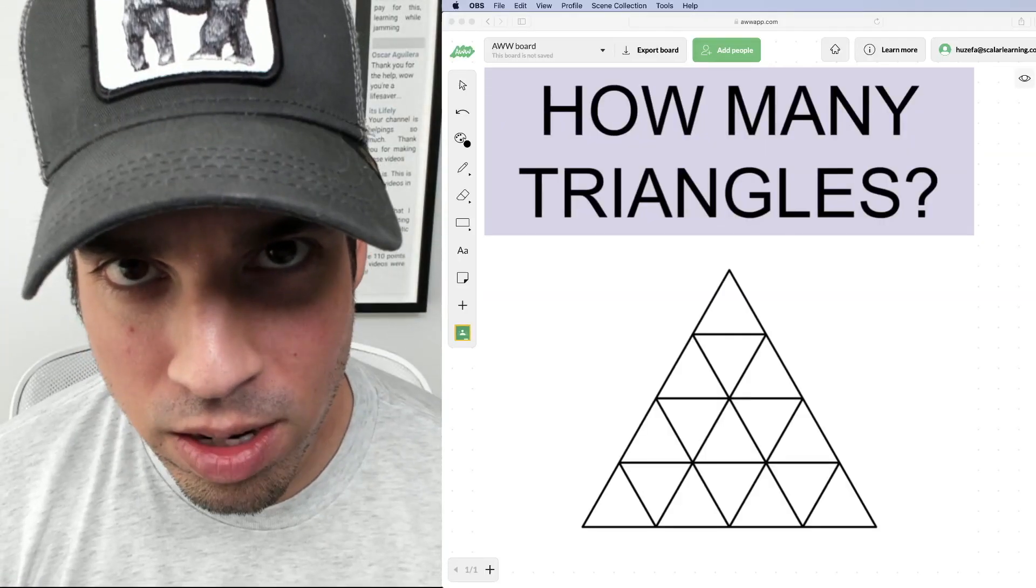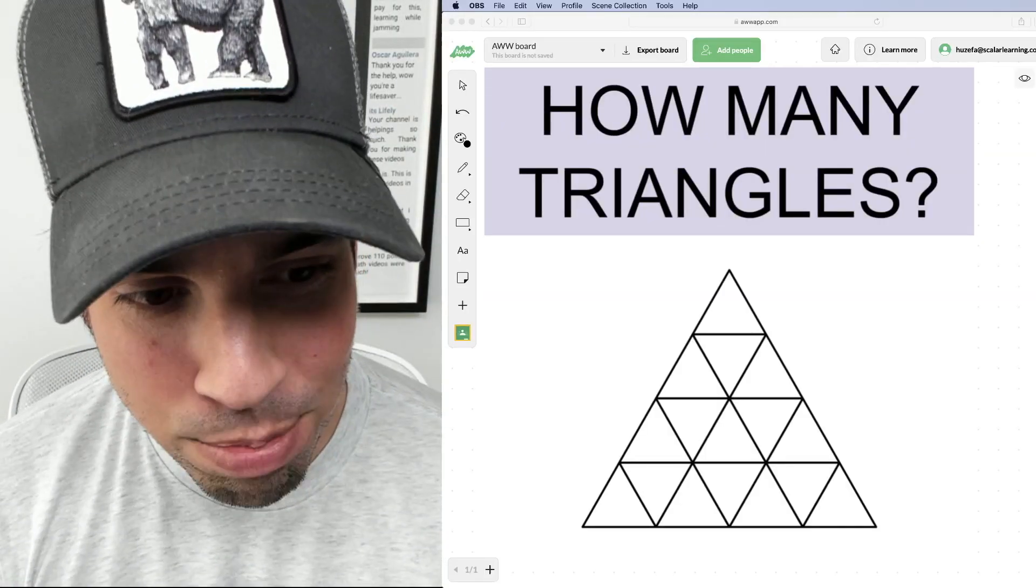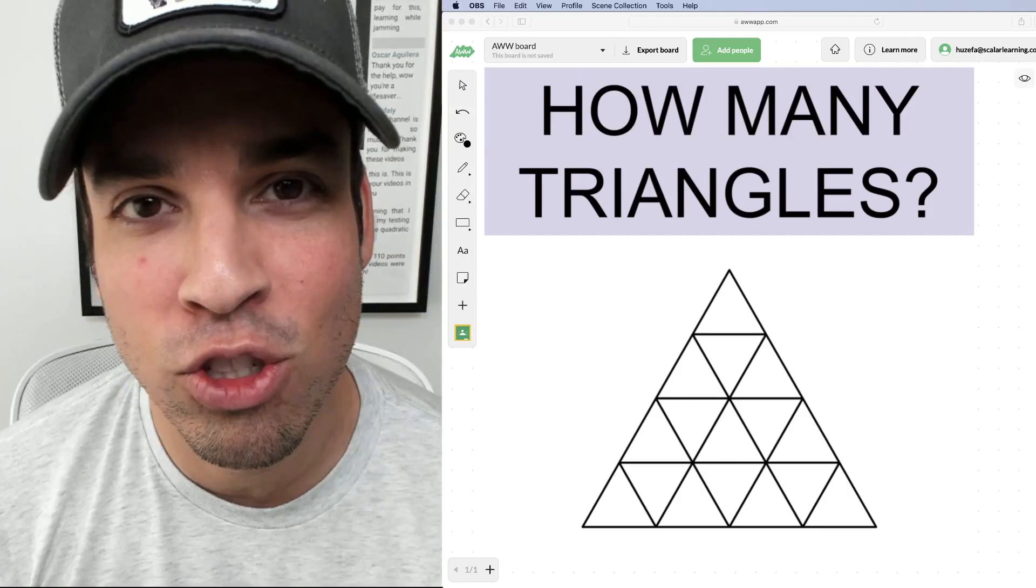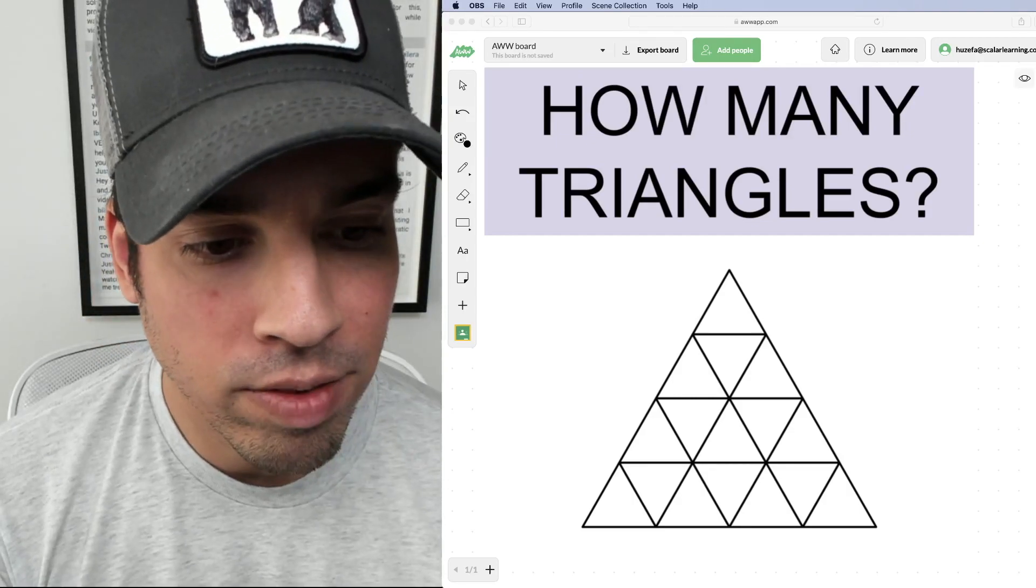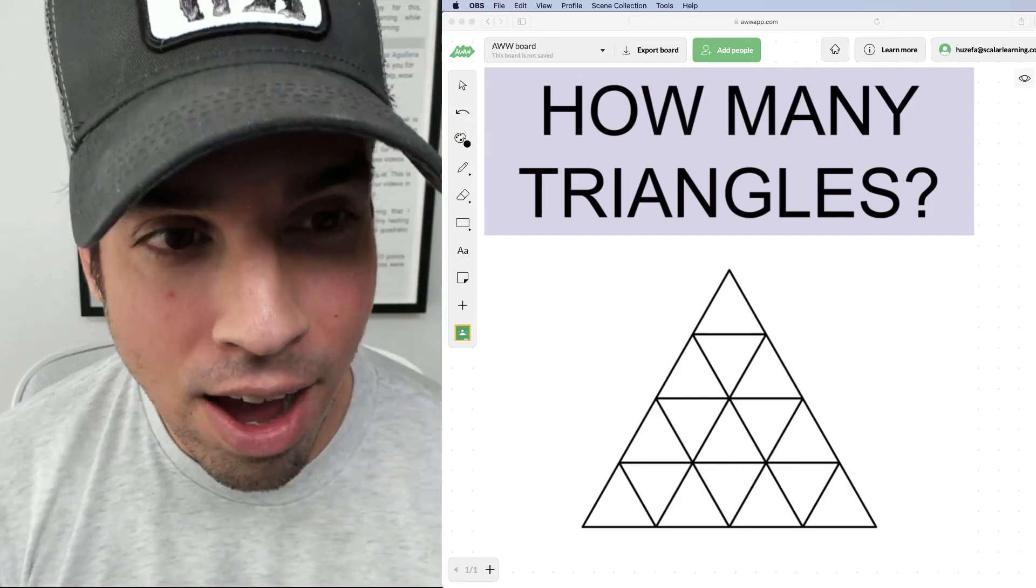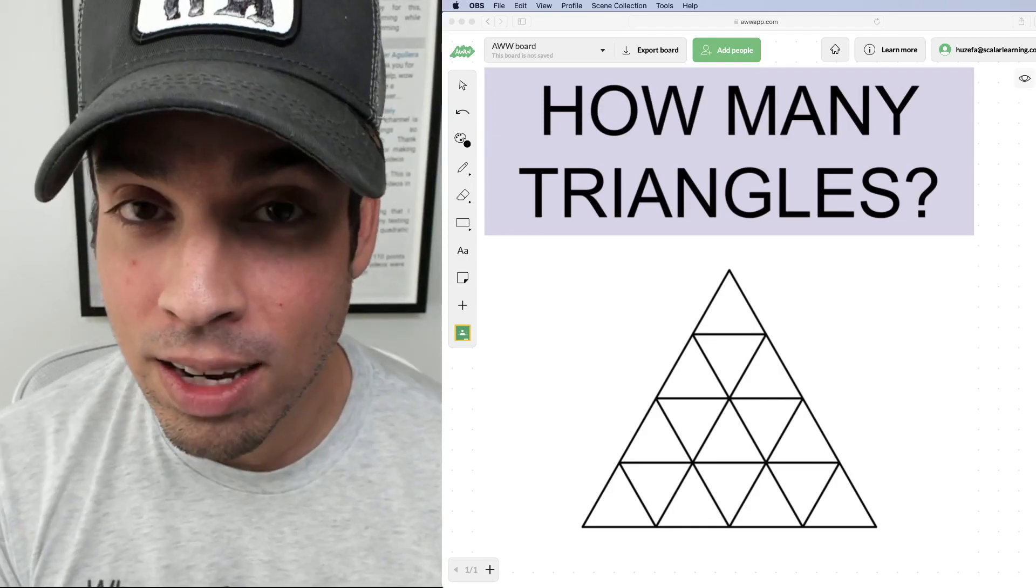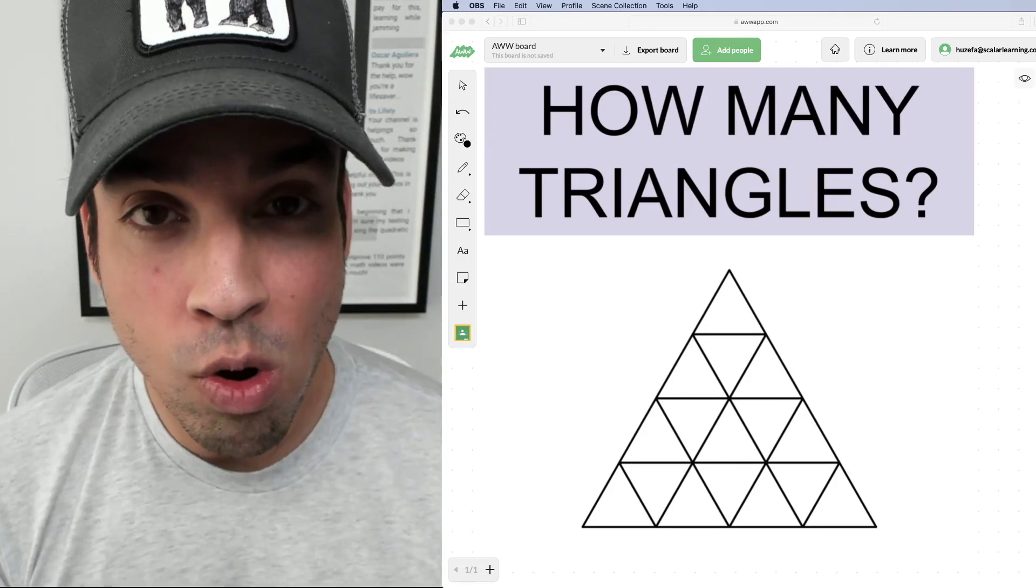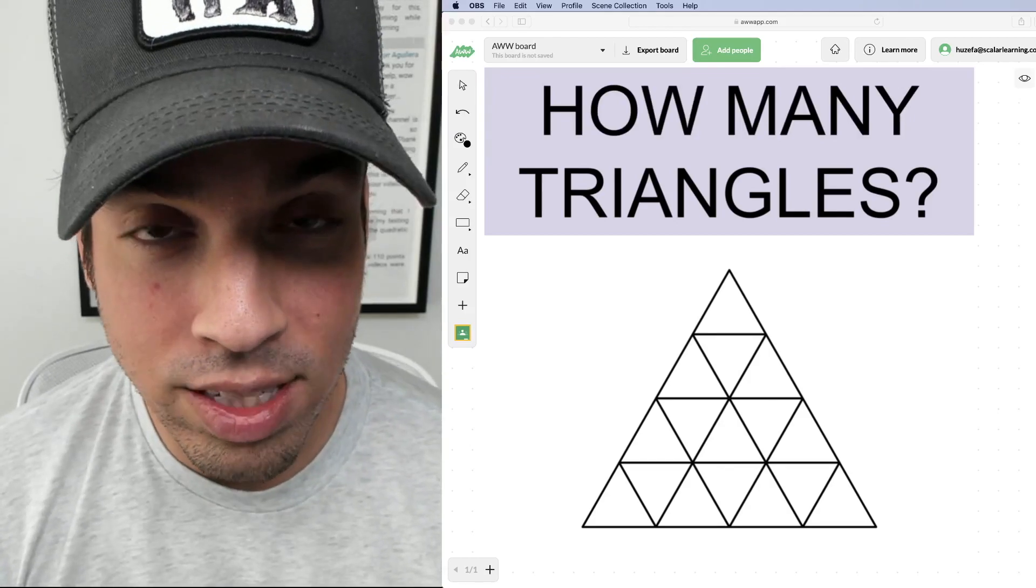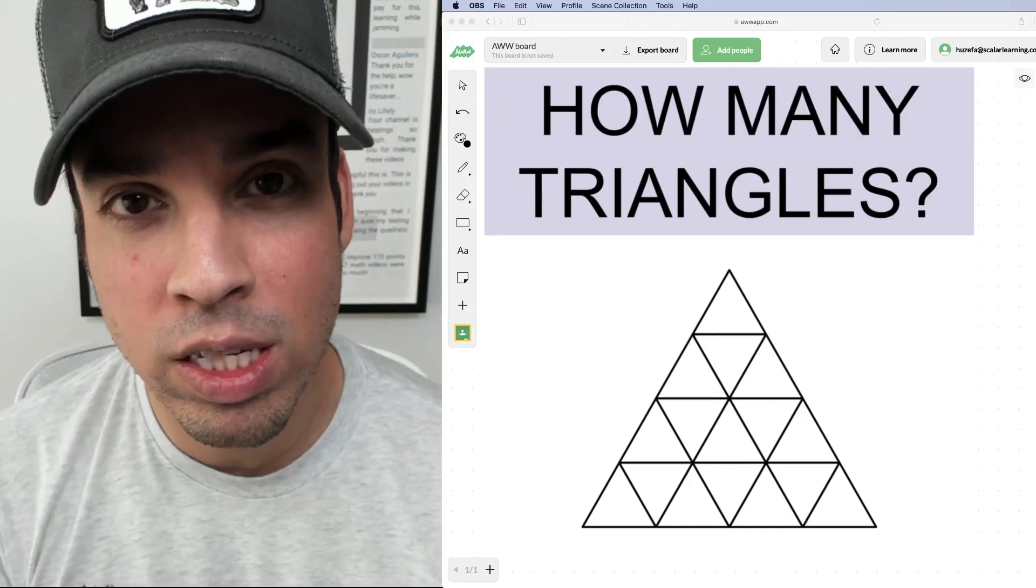What's up everybody and welcome back to another math puzzle. In this puzzle, this is a special spatial reasoning problem and what we're given here is a diagram of all these triangles. How many triangles are in this picture? So again, you want to think carefully before you just go up and count all these triangles that you see and that's why I call this a spatial reasoning problem.